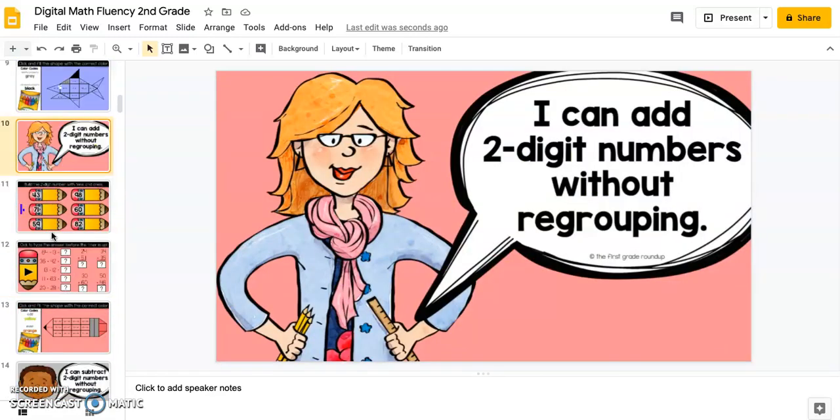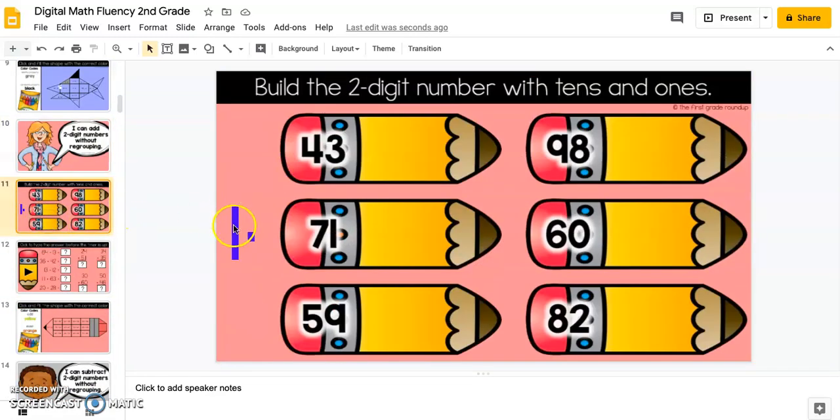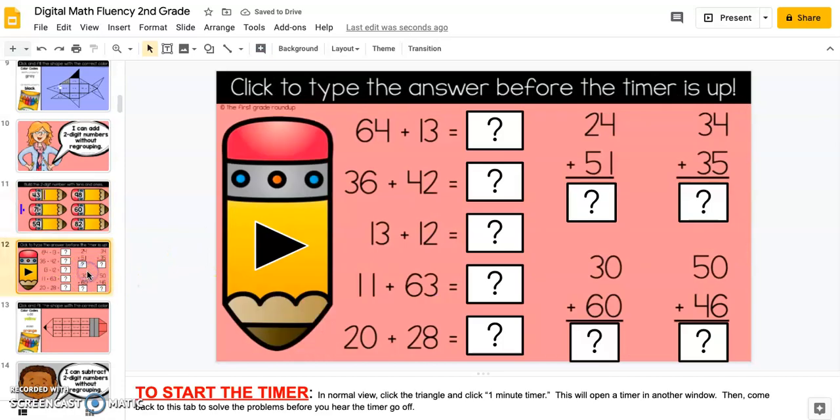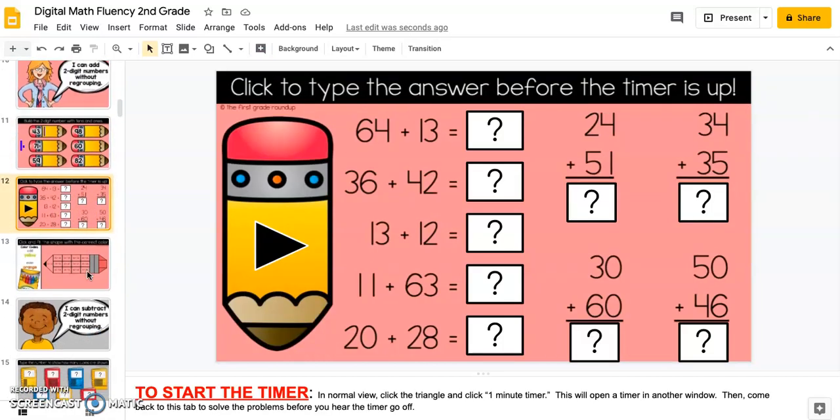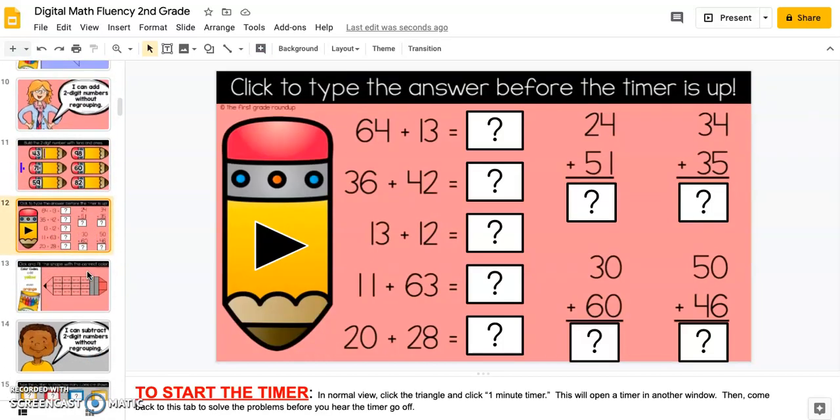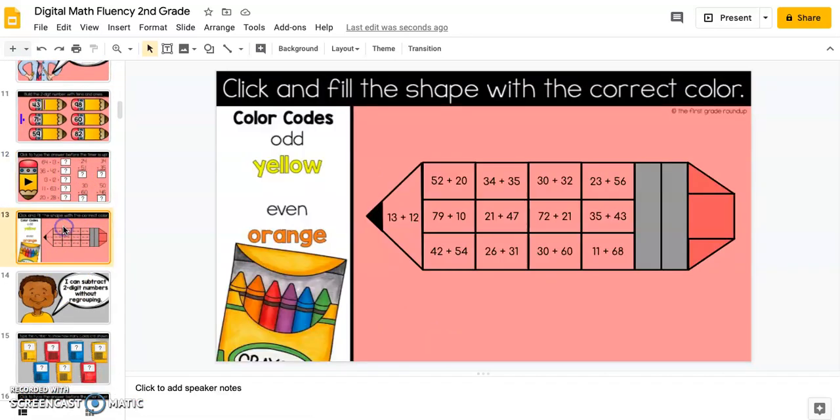This is another skill where they'll use tens and ones to build the number. Another click and type with facts that support that standard. I can add two-digit numbers without regrouping.